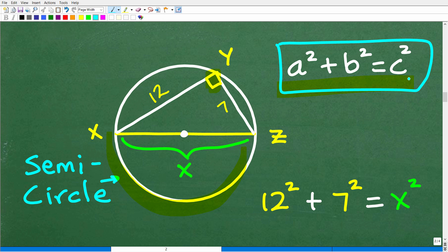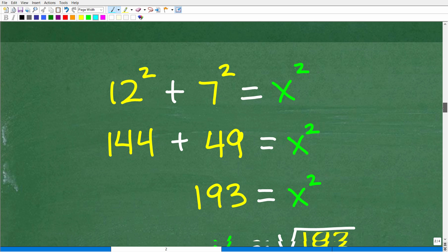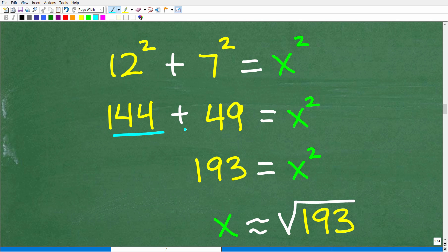So the longest side here is our C side. That's always the hypotenuse. We'll just assign a variable X here. This could be A, this could be B, it doesn't make a difference. So let's plug in this information. A squared will be 12 squared plus B squared will be 7 squared is equal to X squared. Let's solve for X. That will be the diameter of this circle. What we want, though, is the radius, which is one half of the diameter.